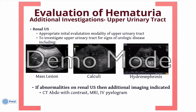Many would argue that in the setting of gross hematuria or significant risk factors for urologic disease, a CT of the abdomen and pelvis with contrast or intravenous pyelography can help rule out any significant occult urothelial lesion. But for the most part, a renal ultrasound, properly done, is an excellent start when investigating the upper urinary tract.